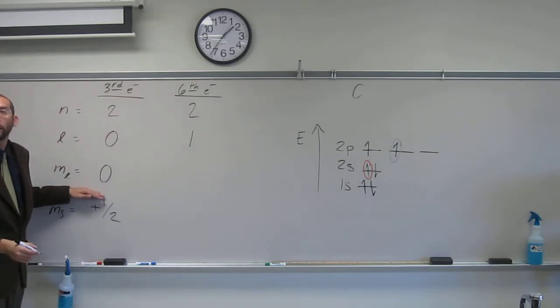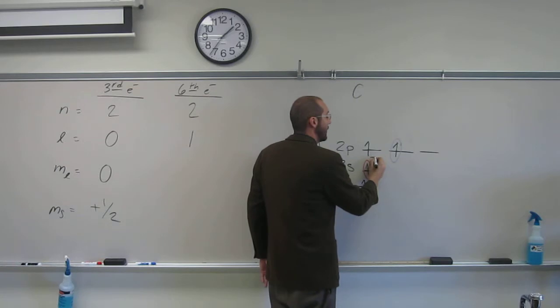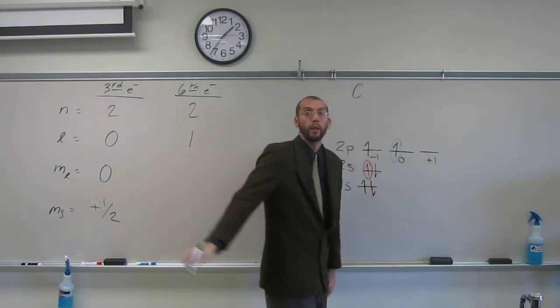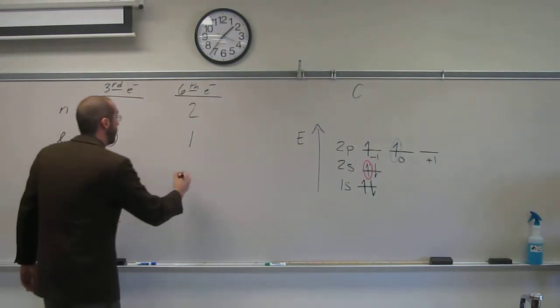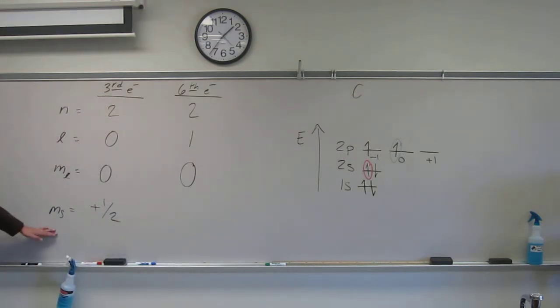m sub l, so in this case, it's going to be zero. Why? Because this is negative 1, this is zero, this is positive 1, like that. So this one's going to be zero. And was it the first electron in or the second electron in? The first, so it's going to be plus 1 half.